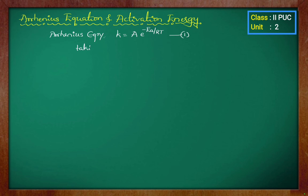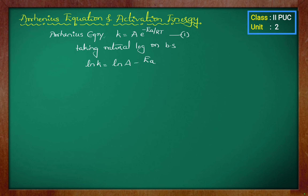Here we will take natural log on both sides of the equation. We can write ln k is equal to ln A minus Ea divided by RT. Let me write this as equation 2.